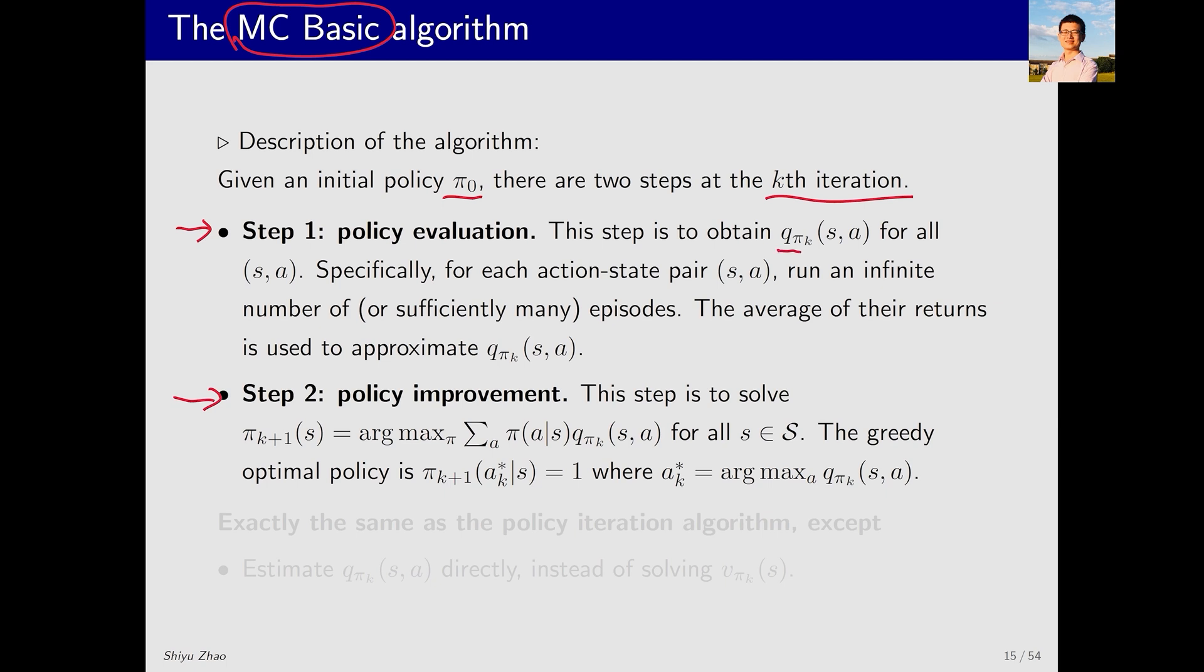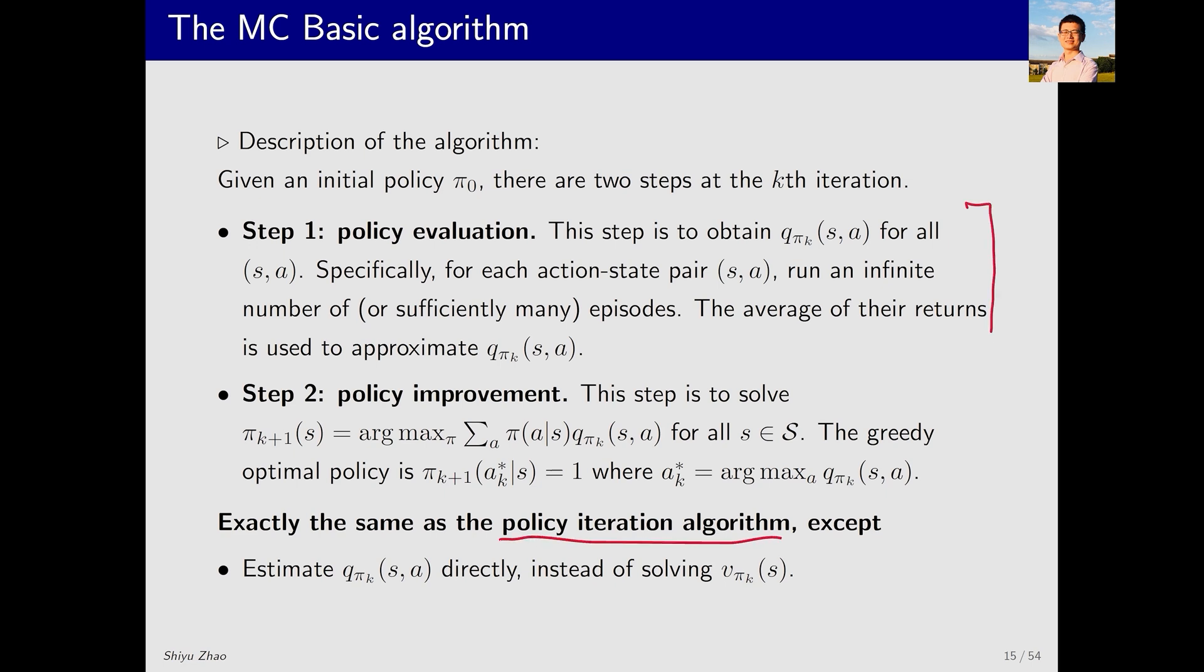In policy evaluation, we compute q pi k(s,a) for all s,a. The method involves starting from s,a, obtaining many episodes, and calculating the average return of these episodes to estimate q pi k(s,a). Then, in the policy improvement step, based on q pi k obtained in the previous step, we solve an optimization problem to get a new policy. This is essentially the same as the policy iteration algorithm, with the only difference being in the first step. Policy iteration first solves for state value, and then calculates action value, while MCBasic directly estimates q pi k from samples.